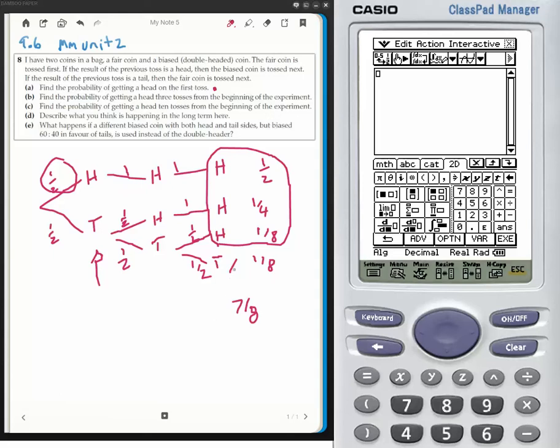The next part of the question says getting a head ten tosses from the beginning. I don't wish to draw this out for ten amounts, so I'm going to use the transitional matrix.